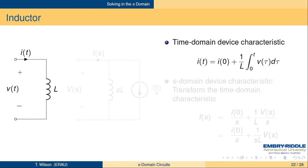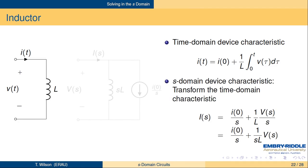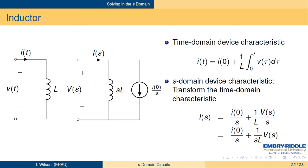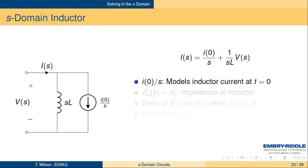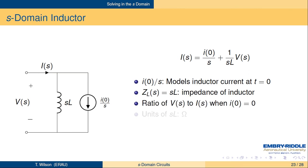You can do this for inductors also. You take the integral form of the equation and transform it to the S-domain to get cap I of S equals I of zero over S plus one over SL times the inductor voltage V of S. In the circuit diagram, you see an impedance SL in parallel with a current source of strength I of zero over S pointing in the direction of I of T. Those sum to make cap I of S the total current flowing through the device, and cap V of S is the voltage across the inductor. I of zero over S models the inductor current at T equals zero. SL is the impedance of the inductor, has units of ohms, and is the ratio of voltage to current in the S-domain when the inductor current is zero at T equals zero.